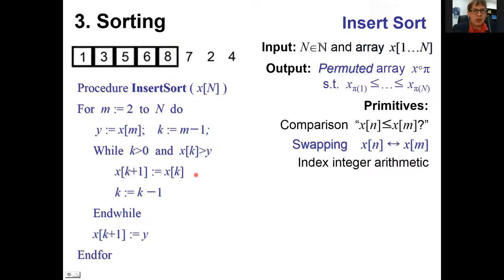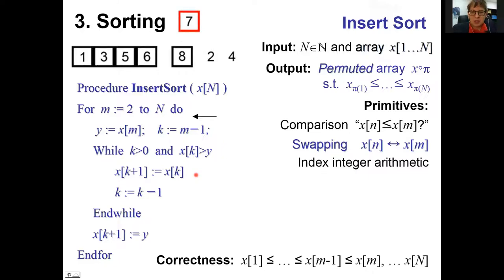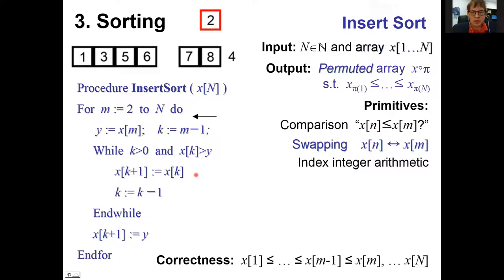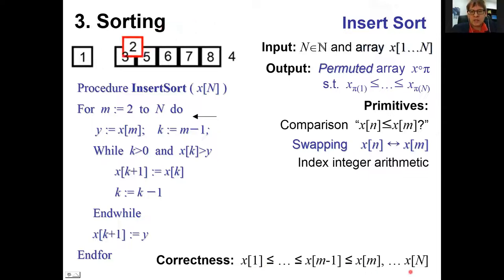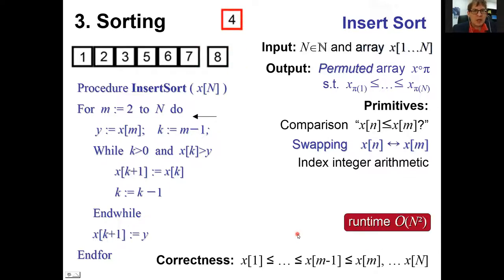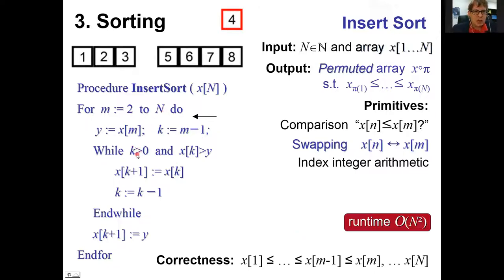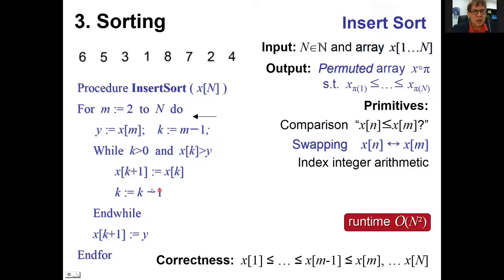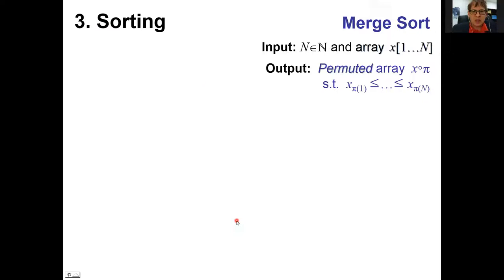The loop invariant for insertion sort is that the initial part of the array is already sorted and the last part remains to be sorted. The running time is also quadratic: two nested loops, where the inner loop starts at M-1 and decrements until K reaches zero.